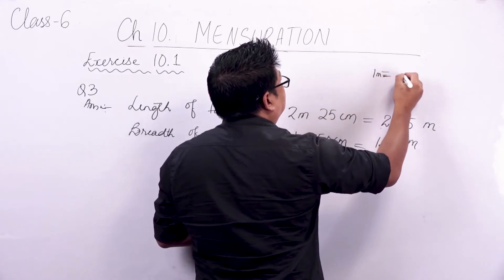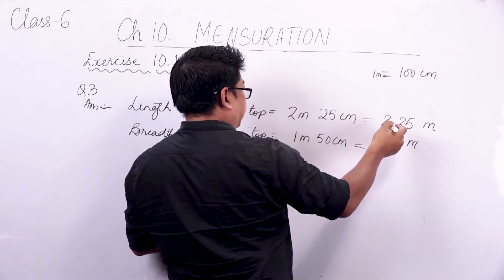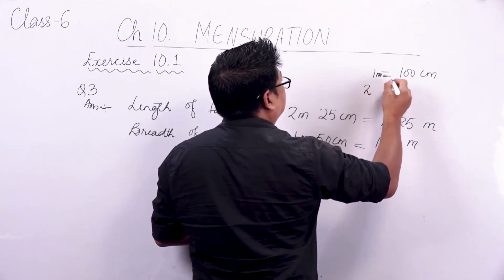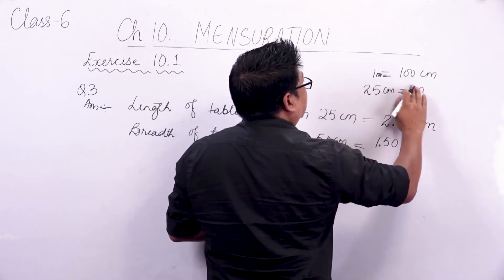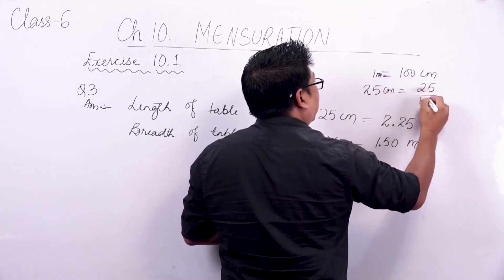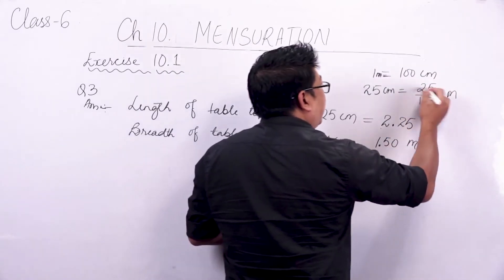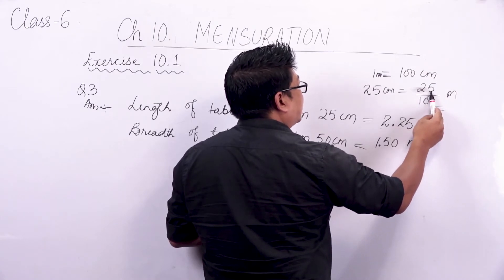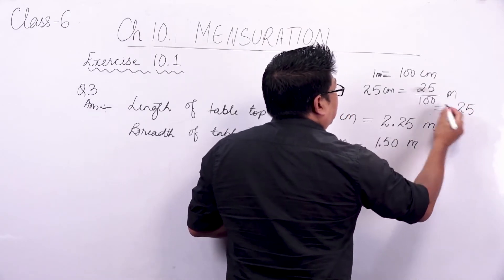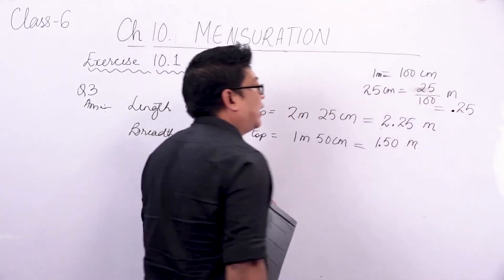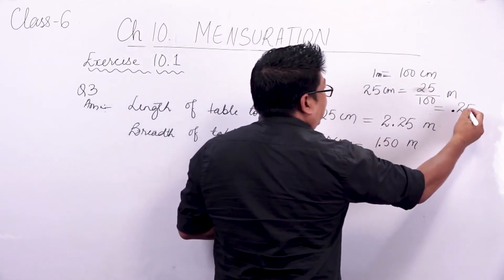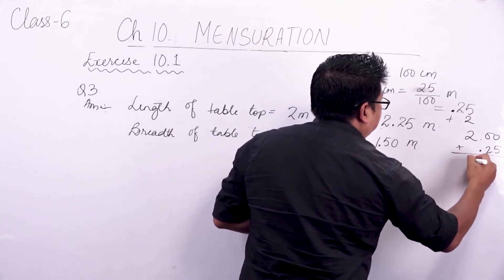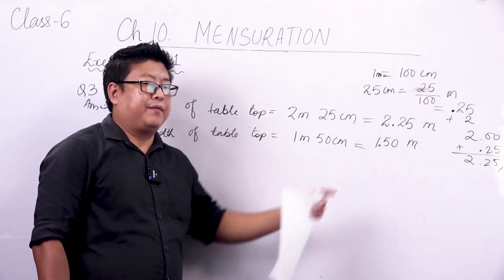1 meter is equal to 100 cm. So to convert 25 cm to meters, you divide by 100. Since there are 2 zeros, we count 2 decimal places: 25 divided by 100 gives 0.25. Then 2 meters plus 0.25 gives 2.25 meter. In the same way, 1.50 meter is also achieved for the breadth.